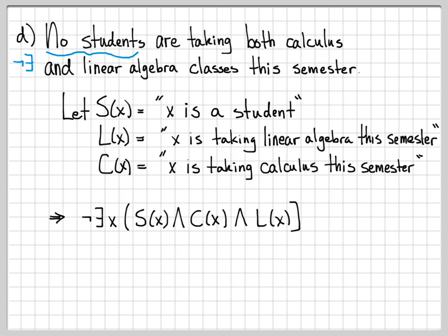So we can represent this original English sentence as this logical expression. There does not exist an X such that X is a student, and they are taking calculus, and they are taking linear algebra. Both was represented by the ands. So there's a handful of examples of how we can transform English sentences into logical expressions. And all of these logical expressions that we use end up using quantifiers, the there exists and the for all symbols that we've just learned about.